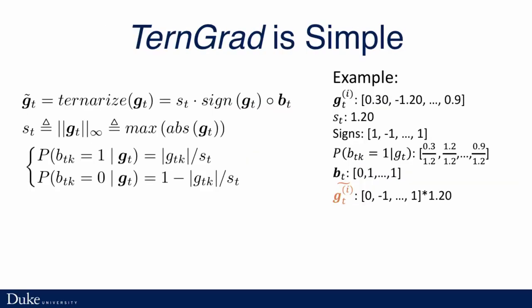TernGrad is simple. First, we just need to get the maximum norm of the gradient, which is the maximum absolute value of all gradients, and then we get the signs of all gradients so we can keep the directions of the gradient. Finally, we multiply them with a value distribution which is either 1 or 0. For each gradient, the probability of being 1 is the magnitude of the specific gradient over the maximum norm.